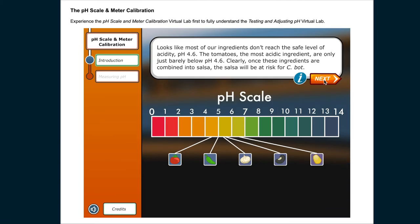Looks like most of our ingredients don't reach the safe level of acidity, pH 4.6. The tomatoes, the most acidic ingredient, are only just barely below pH 4.6. Clearly, once these ingredients are combined into salsa, the salsa will be at risk for C. bot.